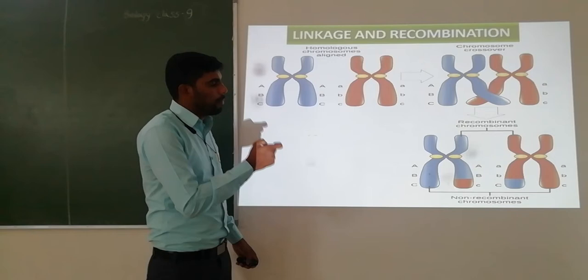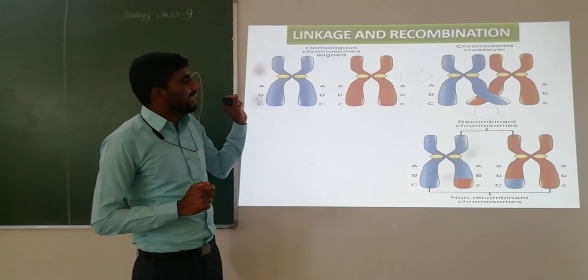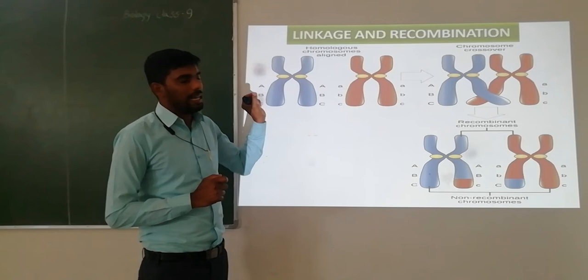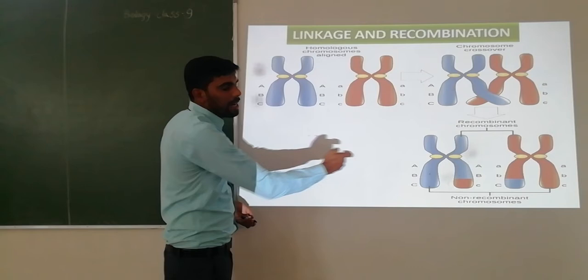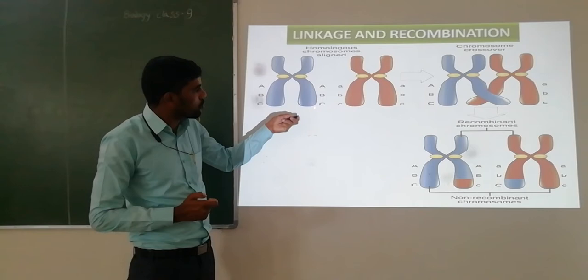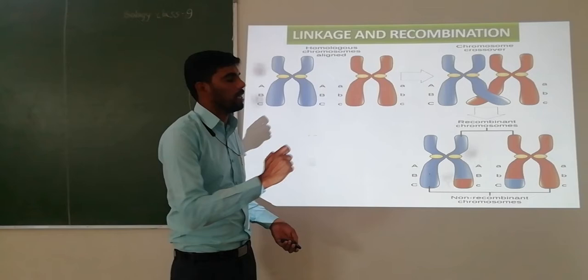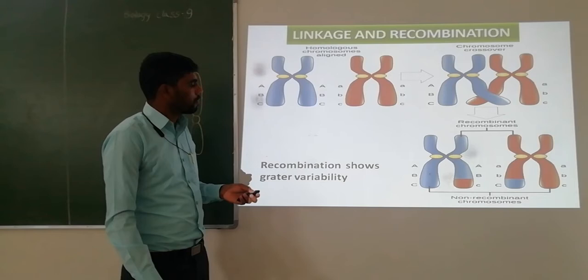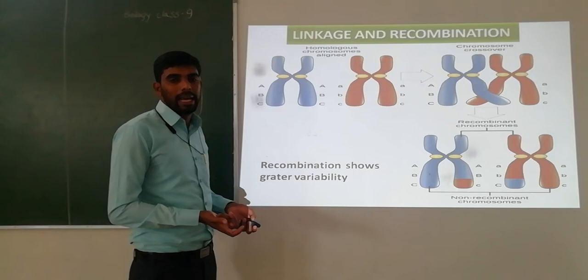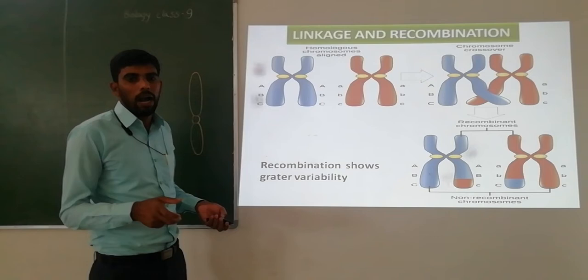This is the linkage and recombination relationship. In recombination, some linked genes are assorted infrequently in their gametes. When genes recombine through exchange of chromatids, they show variation. Because of recombination and sexual reproduction, they show more variation.